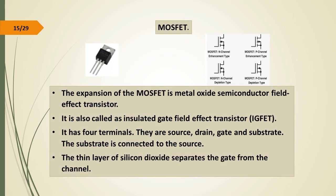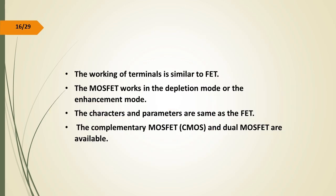MOSFET stands for Metal Oxide Semiconductor Field Effect Transistor. It is also called the Insulated Gate Field Effect Transistor. It has four terminals: source, drain, gate, and substrate. The substrate is connected to the source. A thin layer of silicon dioxide separates the gate from the channel. The MOSFET works in the depletion mode or the enhancement mode. Its characteristics and parameters are the same as the JFET.